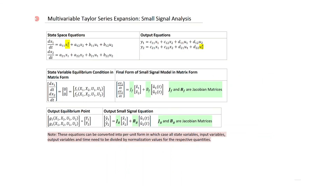The last topic is the multivariable Taylor series expansion applied to small signal analysis. A system is described by state-space equations with state variables X1 and X2 and input variables U1 and U2. One differential equation is nonlinear (X1 is squared) and one output equation is nonlinear (U2 to the power of 4).